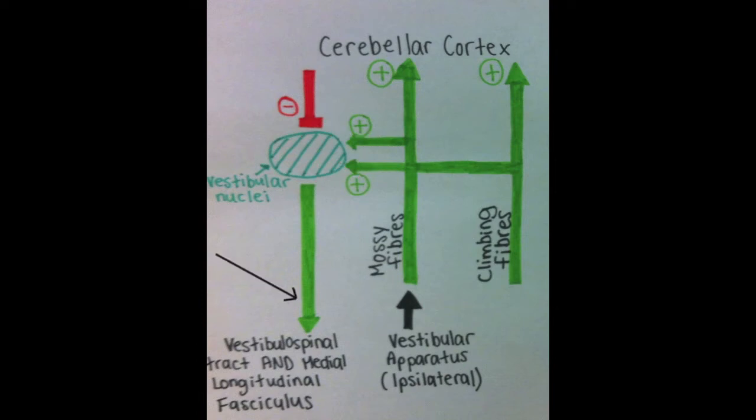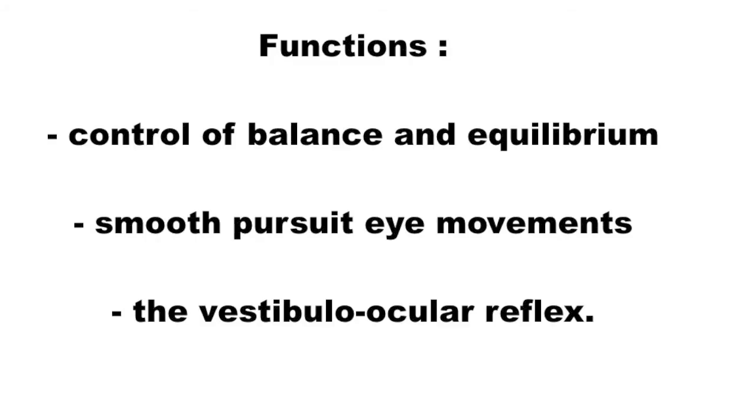The final output from the vestibulocerebellar circuit will descend to the vestibular spinal tract and medial longitudinal fasciculus. This circuit is important in the control of balance and equilibrium, smooth pursuit eye movements, and the vestibuloocular reflex.